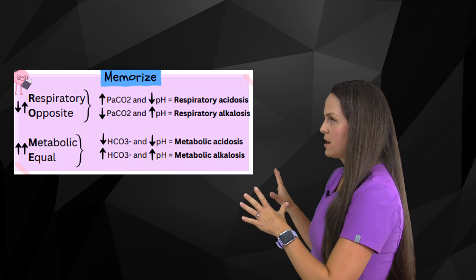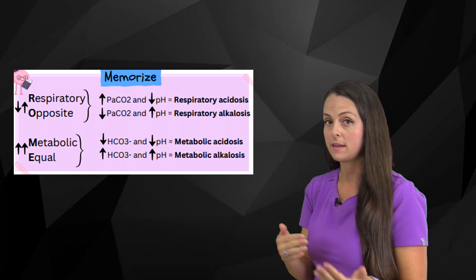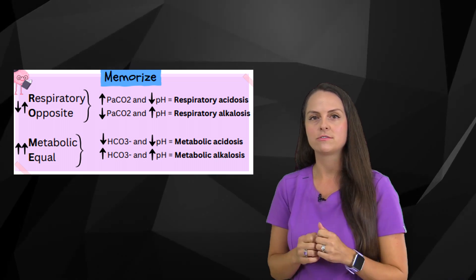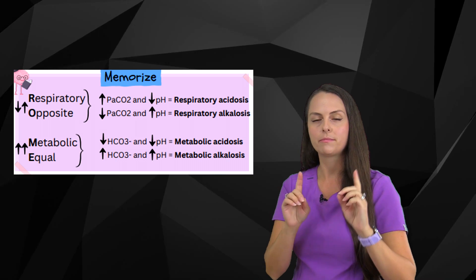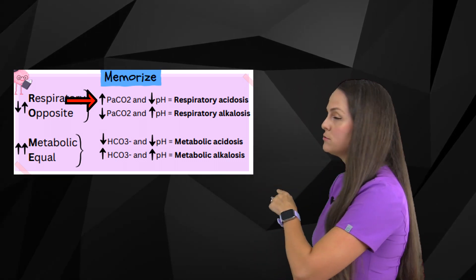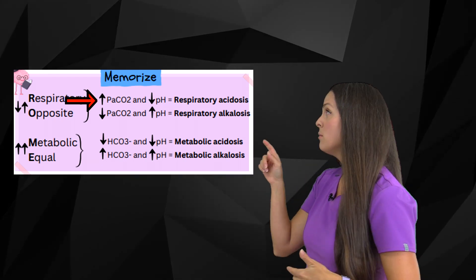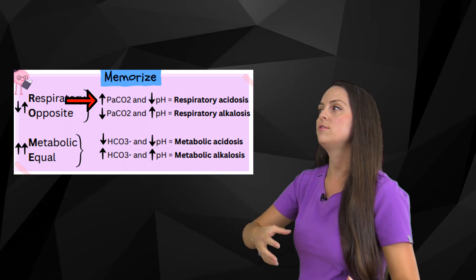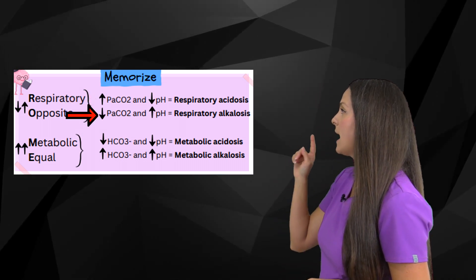Now let's look at how we use these letters to get the answer to our ABG problem. With R and O — respiratory opposite — we're looking at the PaCO2 and the blood pH, and we're looking for them to be opposite of each other, paying attention to which way the arrow is pointing, up or down. For instance, a high PaCO2 and a low blood pH means respiratory acidosis, because when our pH drops it's acidic, and excess CO2 creates carbonic acid. A low PaCO2 and a high pH gives us respiratory alkalosis.